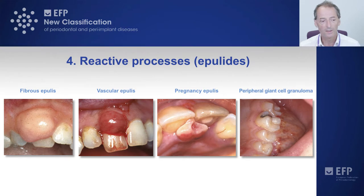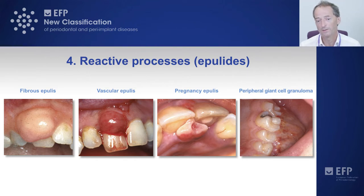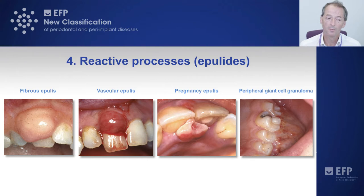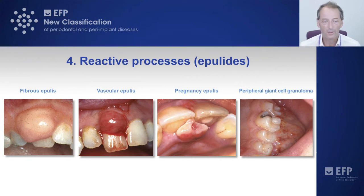The reactive processes are the epulides, which you will see regularly in practice. We have the fibrous epulis, the vascular epulis — also known as a pyogenic granuloma, or a pregnancy epulis if it arises in a pregnant female — representing an exaggerated response to plaque accumulation at a localised site. On the bottom right is a peripheral giant cell granuloma that has grown to quite some size. It's important to x-ray the patient to find subgingival triggers, because if we don't treat the cause, the lesion will recur and require further surgery.